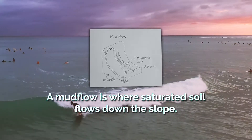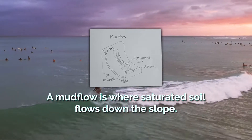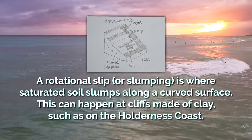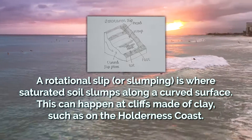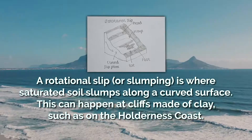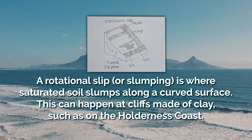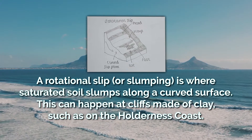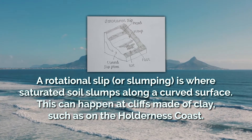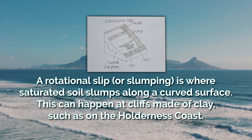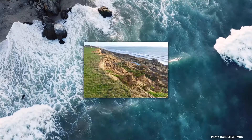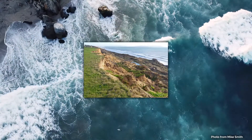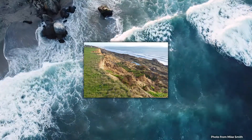A mudflow is where saturated soil flows down the slope. And finally, rotational slumping, also known as a rotational slip, is where saturated soil slumps along a curved surface. This can happen at cliffs made of clay, such as on the Holderness coast. Slumping is easily recognised by the rows of terraces it leaves, as can be seen here.